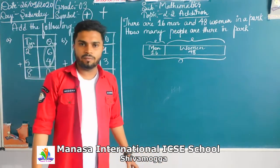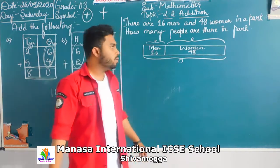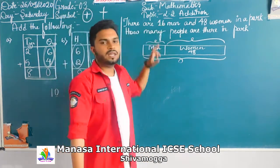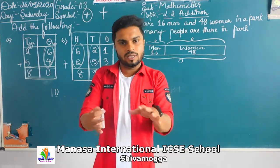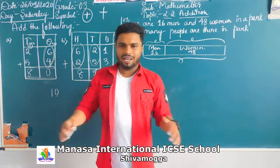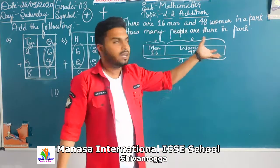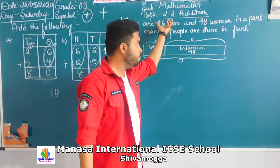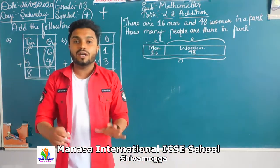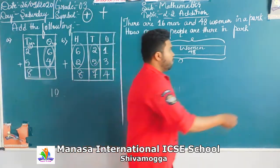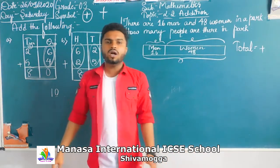Next, see this is a word problem. A word problem is nothing but a sentence problem — you have a sentence. There are 16 men and 48 women in the park. You know what a park is — near your locality, you go for a jog or a walk. How many people are there in the park? We are going to find their total. If you get the word total, you are going to do addition.